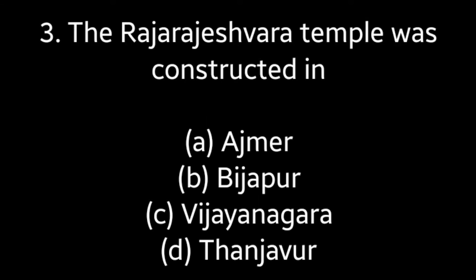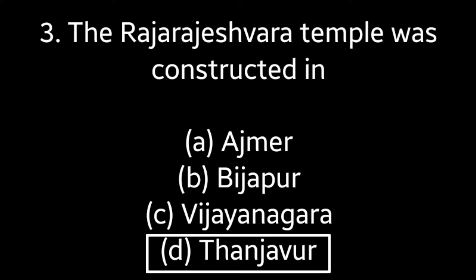Question No. 3. The Raja Rajeshwara Temple was constructed in — Ajmer, Vijayapur, Vijayanagara, Tanjavur. Answer is Option D: Tanjavur.